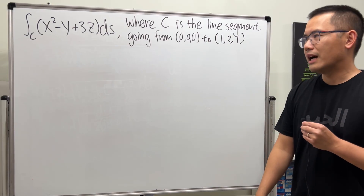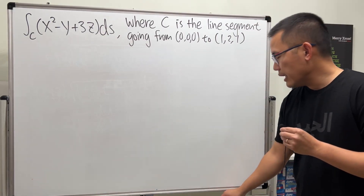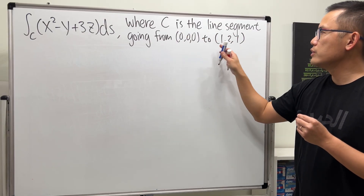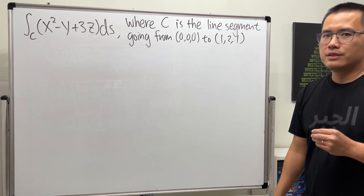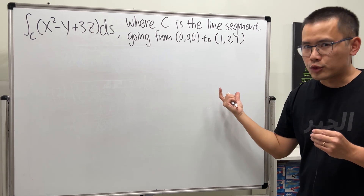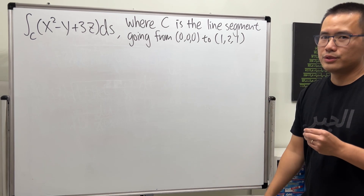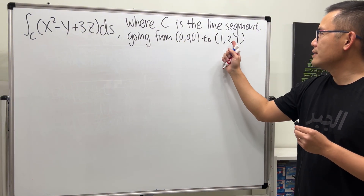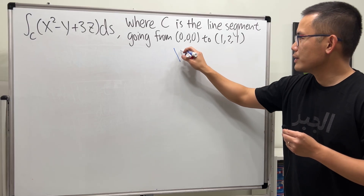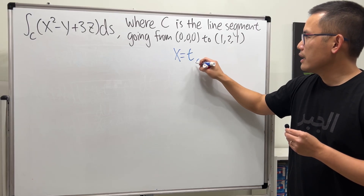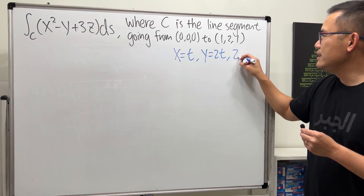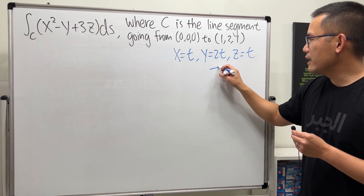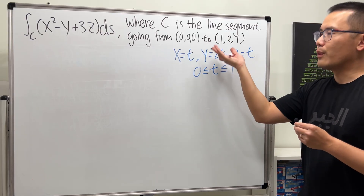For the third problem, we have another 3D case. C is the line segment going from the origin to the point (1, 2, 1). Since it's just a line segment, we parametrize as x equals t, y equals 2t, z equals t, with t going from 0 to 1. That works wonders.